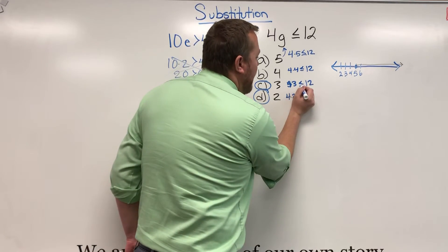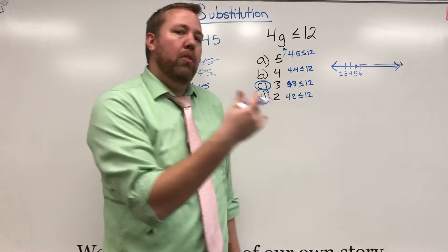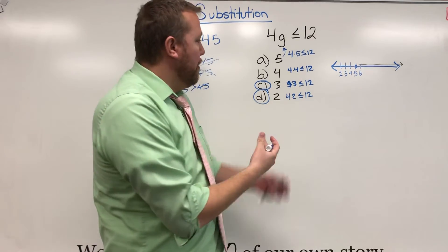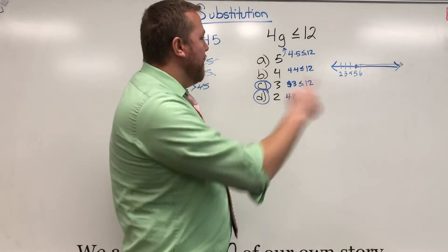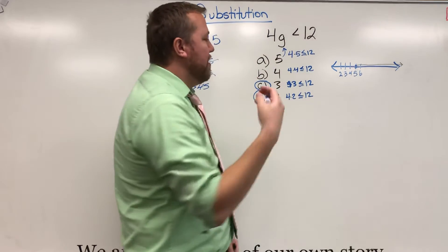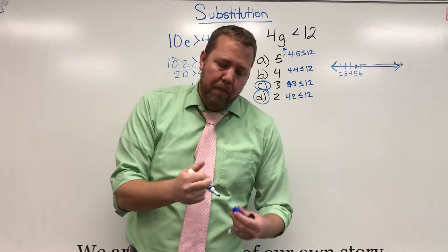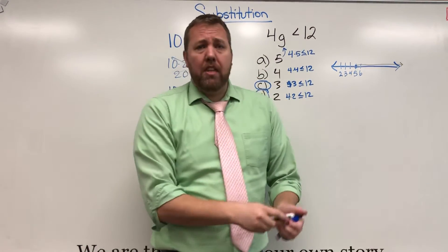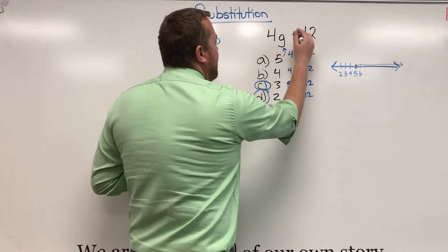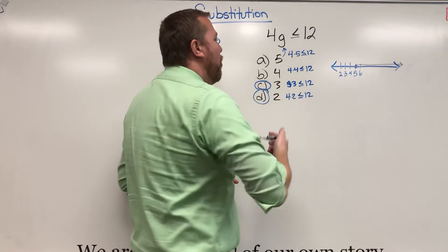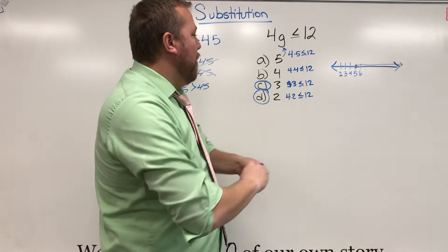Now remember, this was a less than or equal to. So 4 times 3 equals 12. That works. If it were just 4G is less than 12, would 3 work? No, it wouldn't because 12 is not less than 12. But because that inequality was less than or equal to, that will work.